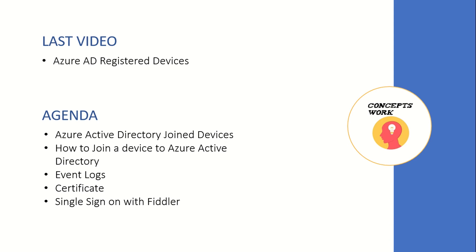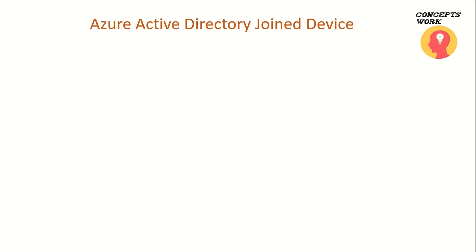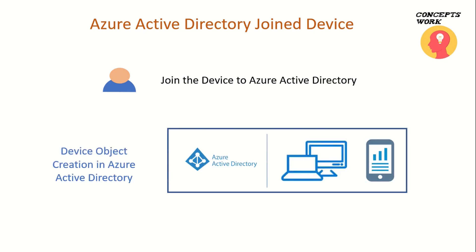The last thing we'll talk about is single sign-on with a Fiddler trace. For Azure AD joined devices, similar to registering a device, we will choose different options to join the device. A device object will be created in Azure Active Directory, but since these are different types of device objects, some attributes will differ. When you query the DSREG command on Azure AD registered versus Azure AD joined devices, you will get different results.